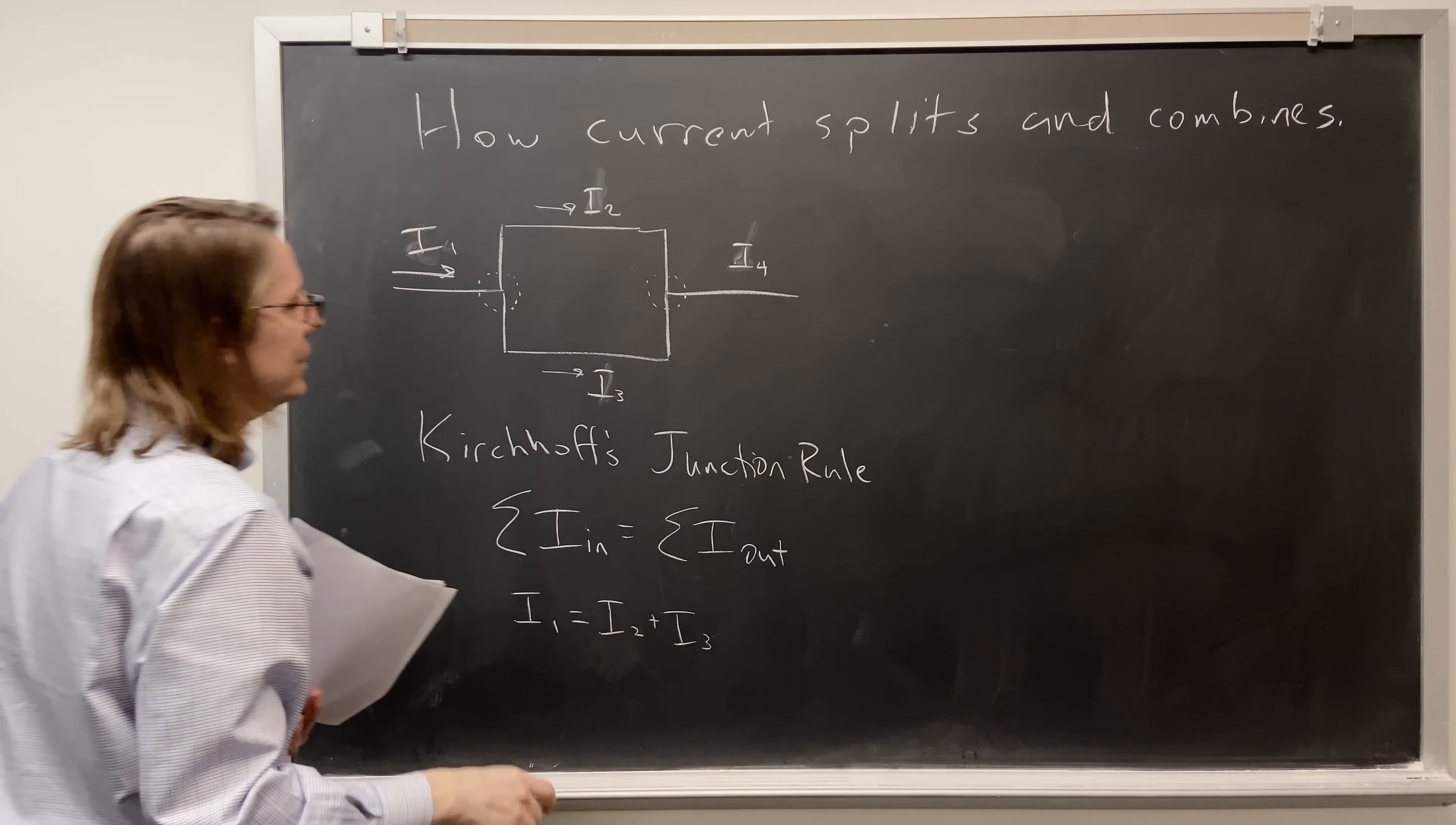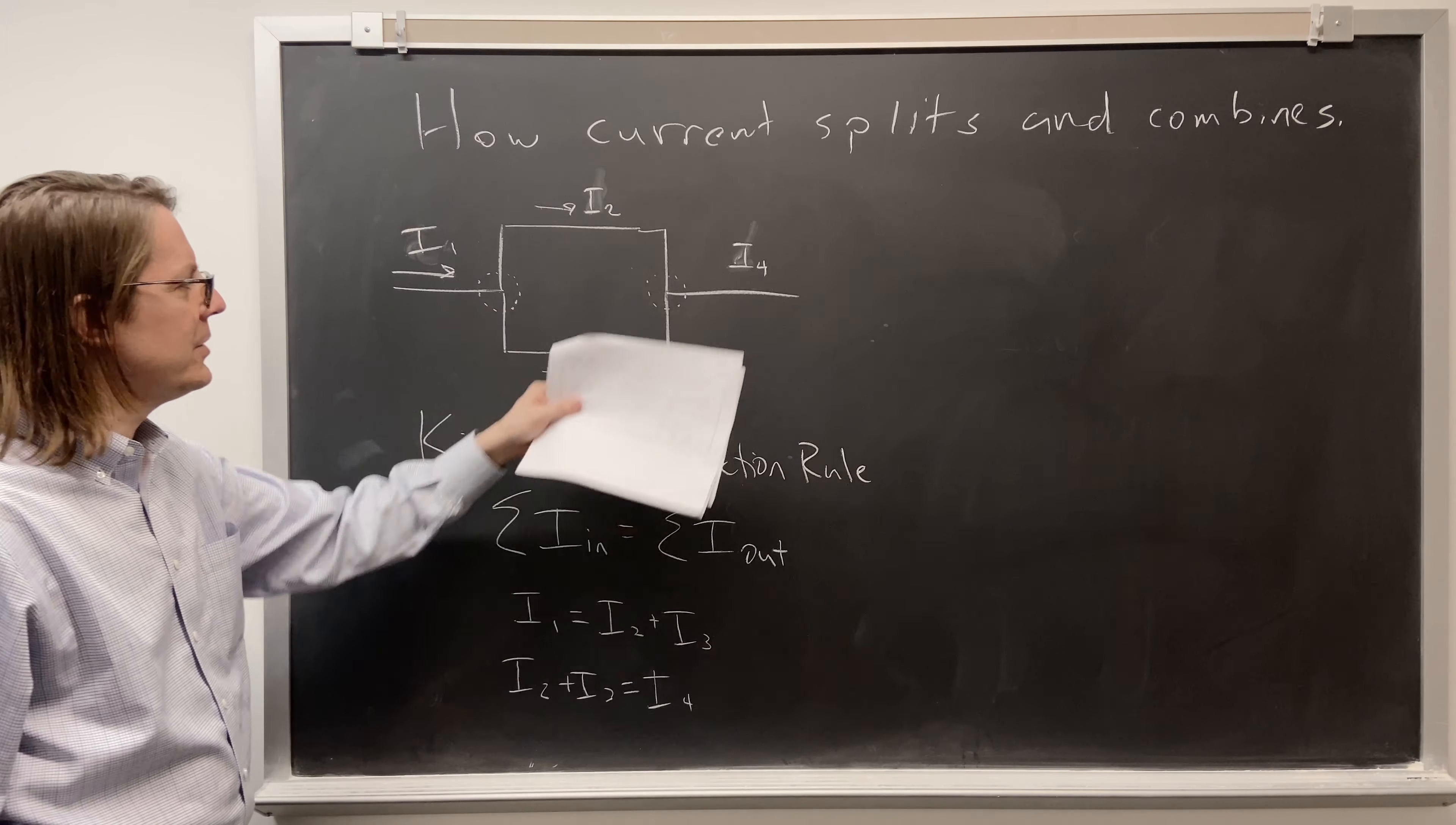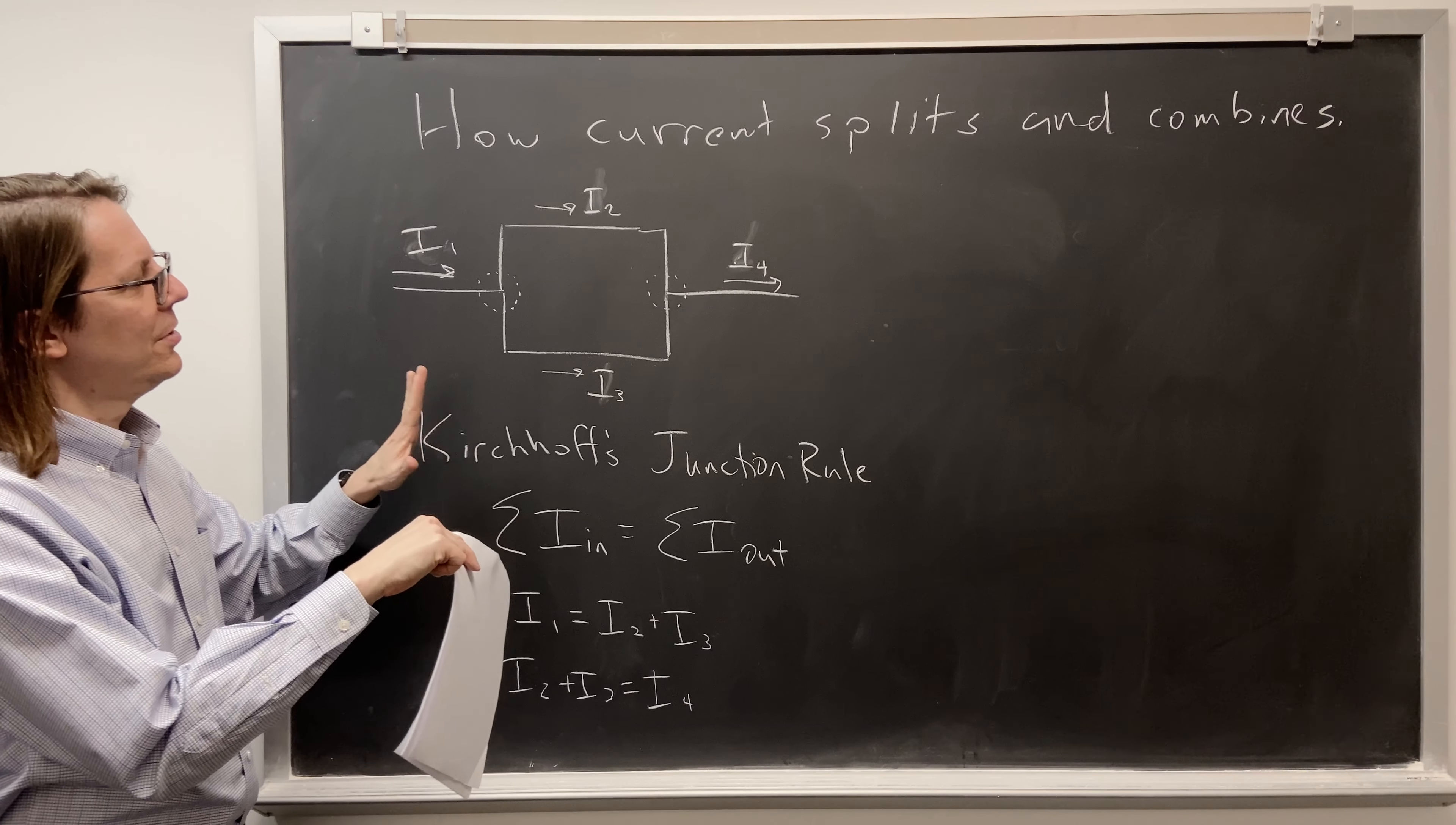Then you can also look at here and say, in there is I2 plus I3 equals I4. That would be the second application of the junction rule. And you can use the little powers of algebra here to realize that I1 equals I4, which also matches your intuition. If a certain current flows in here, splits, comes back together, it's going to be the same current going this way because conservation of charge. Current isn't created or destroyed. It just splits up and comes back together.